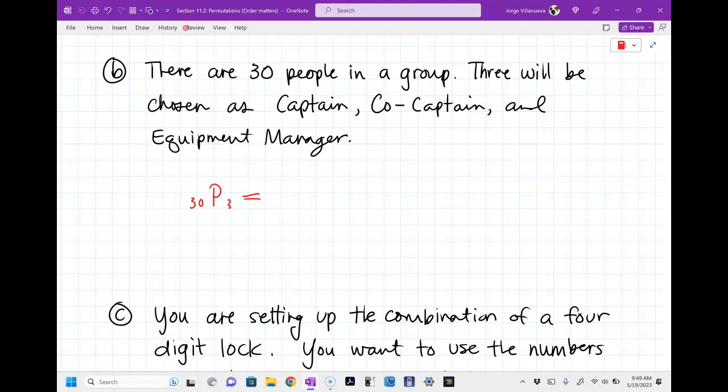So you'll type in 30, then you're going to hit shift times, or maybe you hit probability button. And then you press the number three and you hit enter. And what number does it give you? 24,360. So there you go.